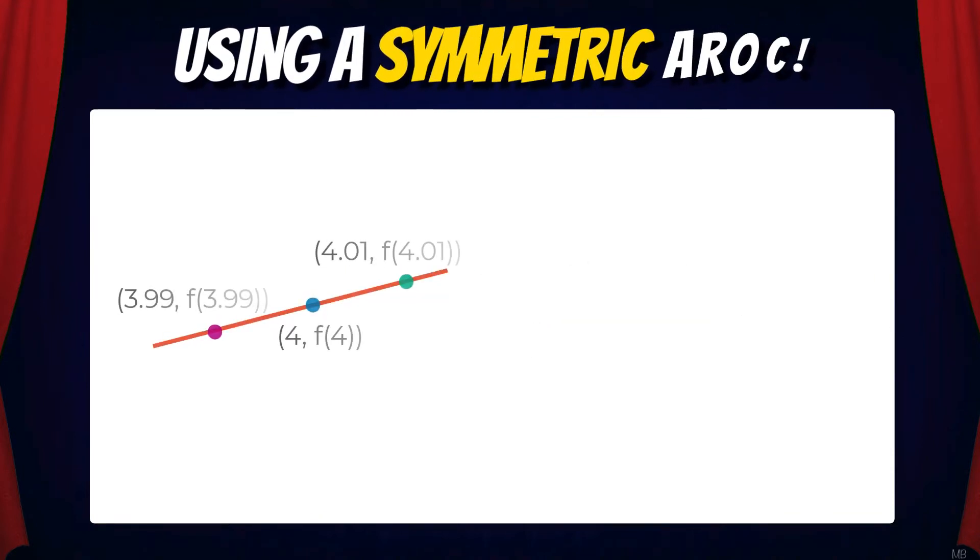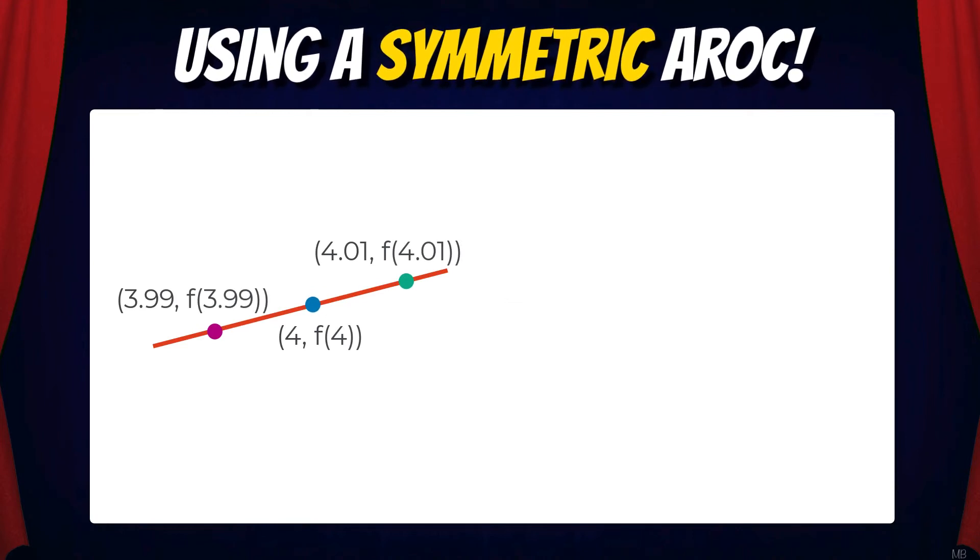An often better approach than the left AROC or the right AROC is the symmetric AROC. This is where we pick points on either side of our point in question.